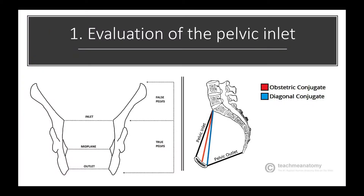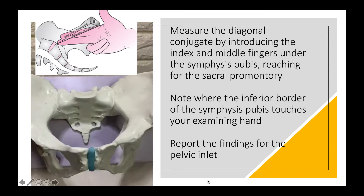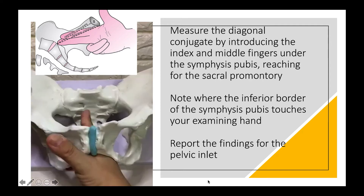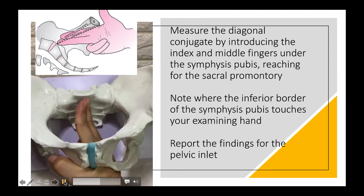Now we evaluate the pelvic inlet. The only way by which we can clinically assess the pelvic inlet is by measuring the diagonal conjugate. We measure the diagonal conjugate by introducing the index and middle fingers under the symphysis pubis and reaching for the sacral promontory. Note where the inferior border of the symphysis pubis touches your examining hand, and note that in this video the examining fingers can hardly reach the sacral promontory.